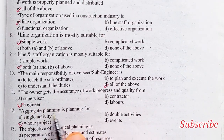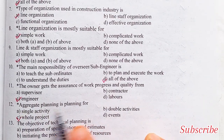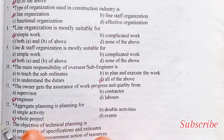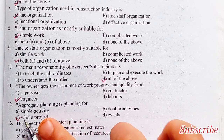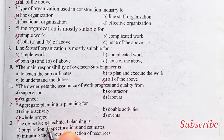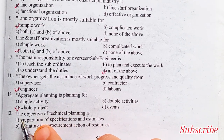Aggregate planning is planning for: single activity, double activities, whole project, or events. Option C is the right answer — the whole project.